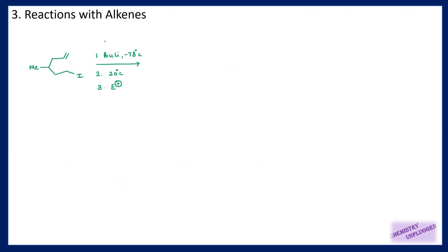Next is the reaction with alkenes. In this case, we have iodine attached here and a double bond here. Whenever we are using an organolithium compound we use low temperature conditions. First there is halogen-lithium exchange, and Li will attach here. In the next step we are heating this reaction mixture to nearly room temperature, up to 20 degrees centigrade.